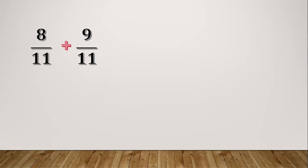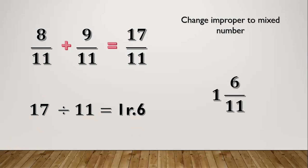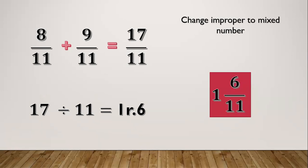Another example: eight elevenths plus nine elevenths. Same process — eight plus nine equals seventeen. Copy the denominator which is eleven, so seventeen over eleven. Since seventeen over eleven is an improper fraction, we change it to a mixed number. Seventeen divided by eleven equals one remainder six. One is our whole number and six is our numerator, so our final answer is one and six elevenths.